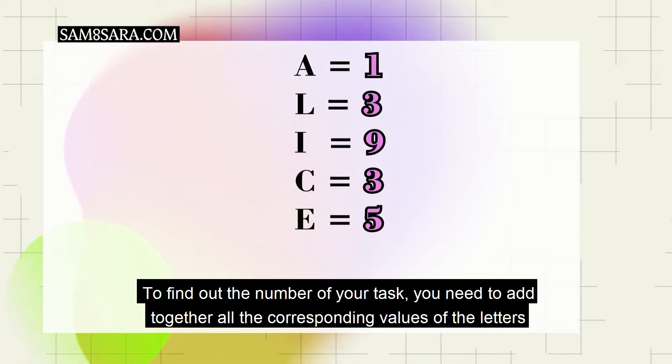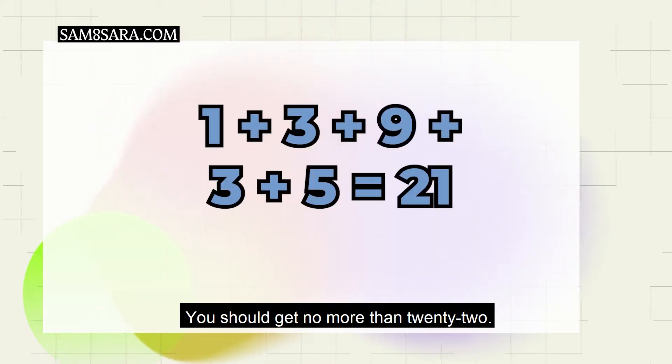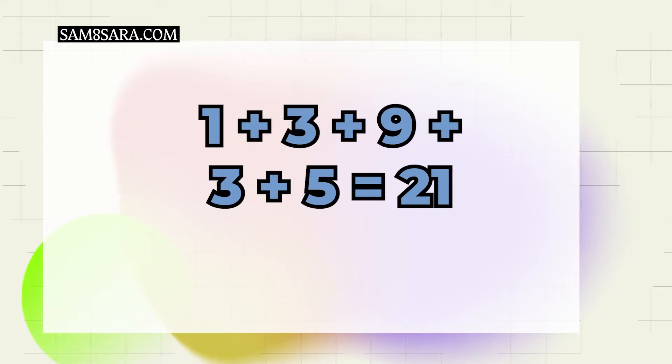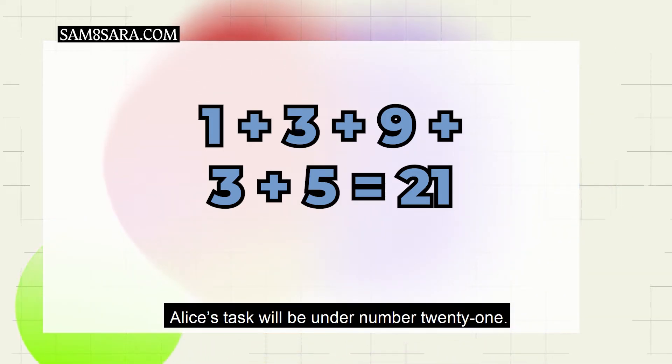To find out the number of your task, you need to add together all the corresponding values of the letters in your name. You should get no more than 22. 21 is the number we need. Alice's task will be under number 21.